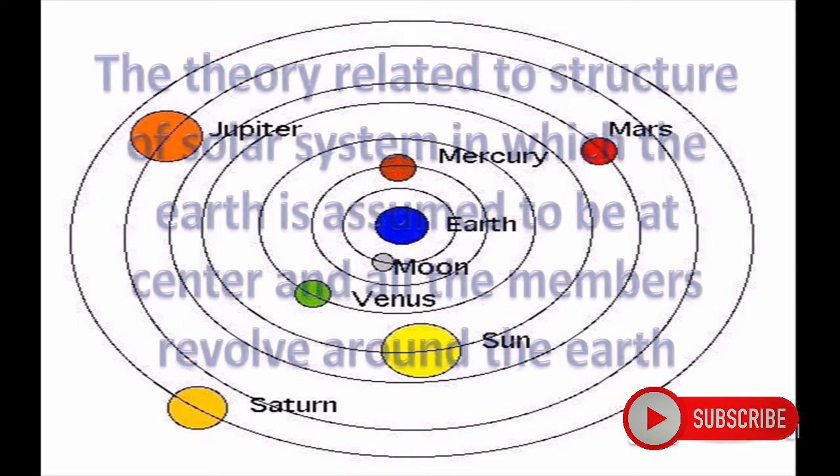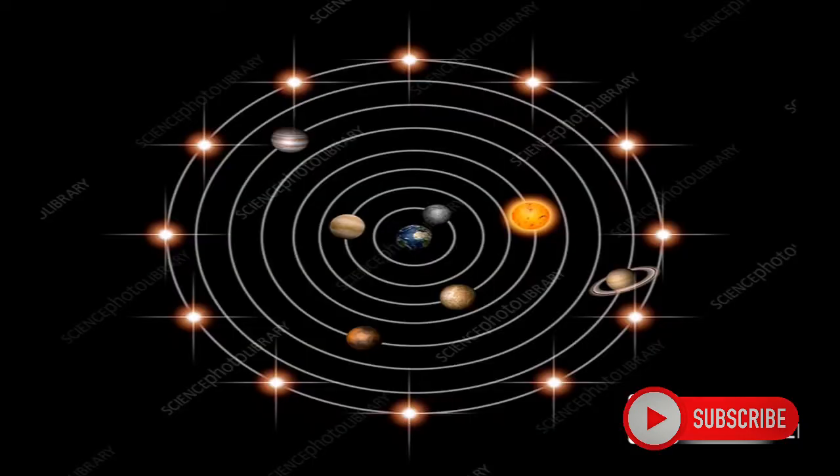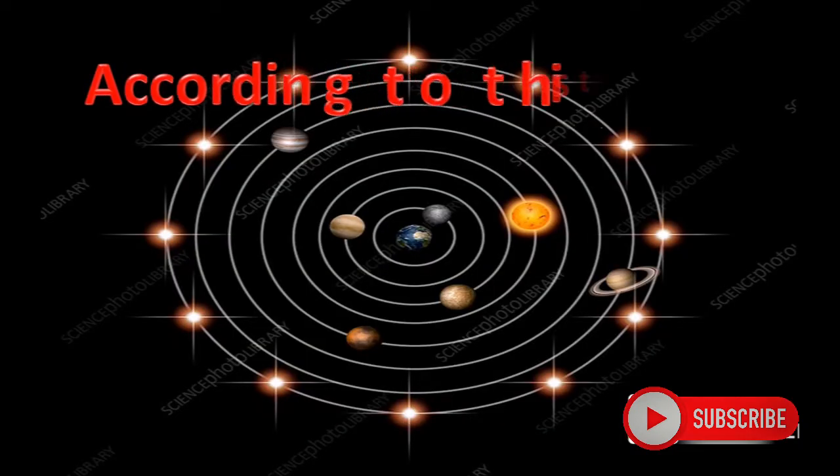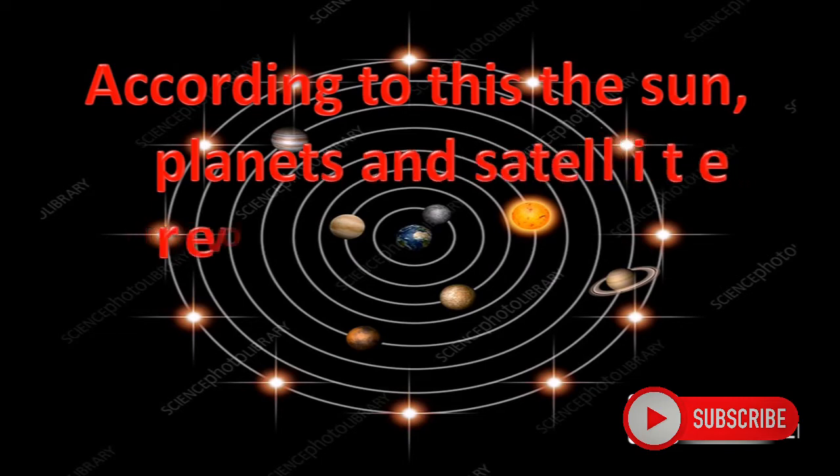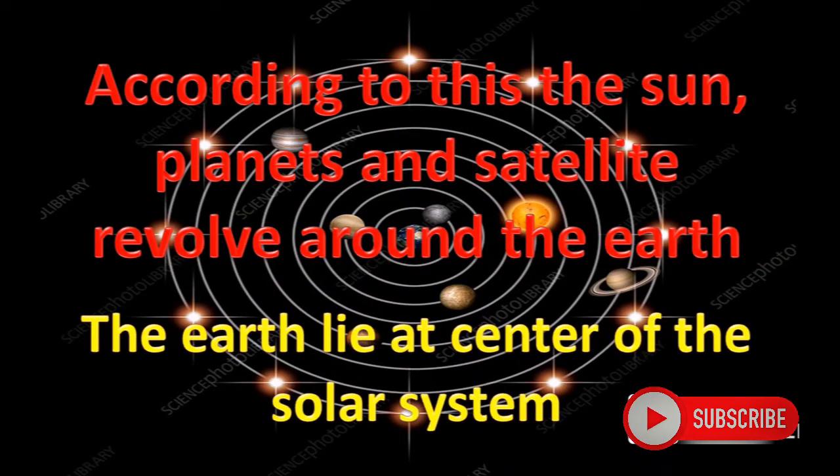The theory related to the structure of the solar system assumes the Earth is at the center and all members revolve around it. According to this theory, the sun, planets, and satellites revolve around the Earth. The Earth lies at the center of the solar system, hence the theory is called geocentric theory.